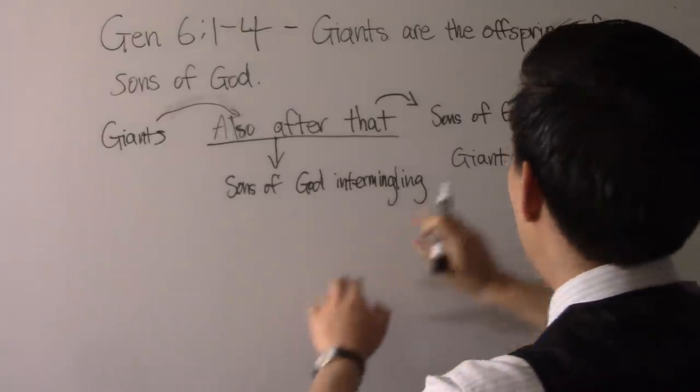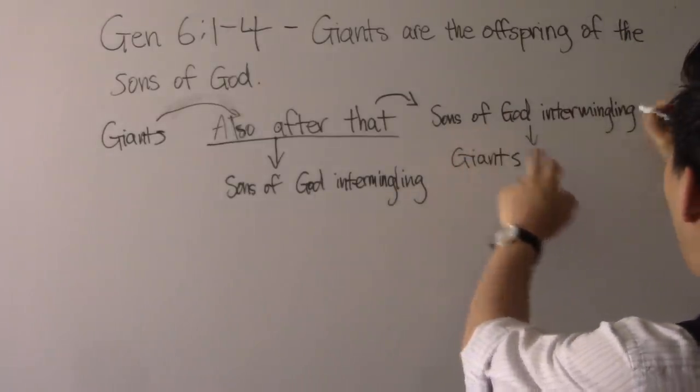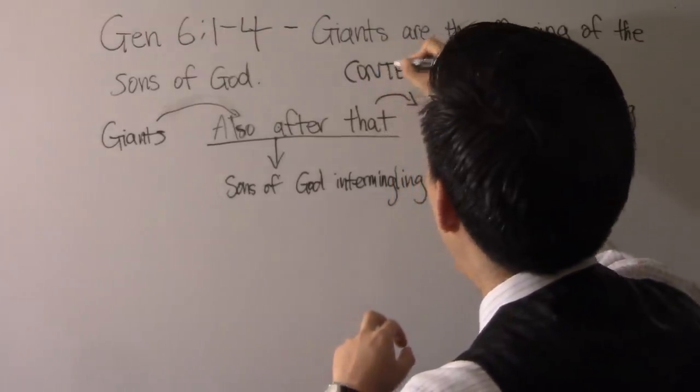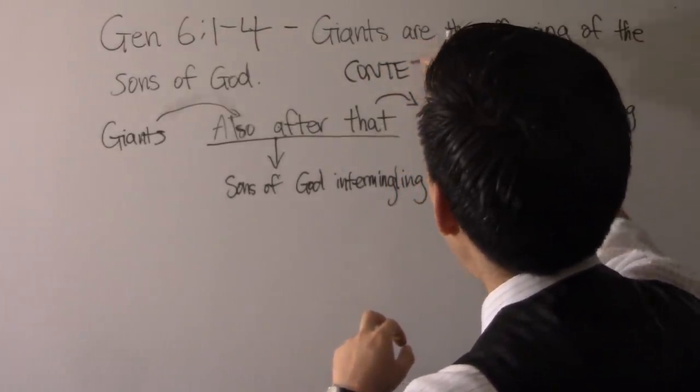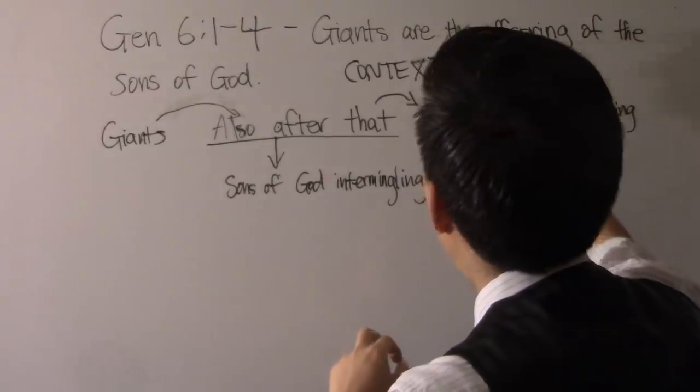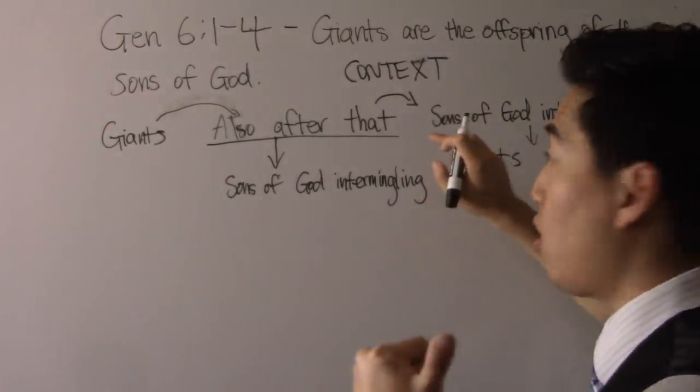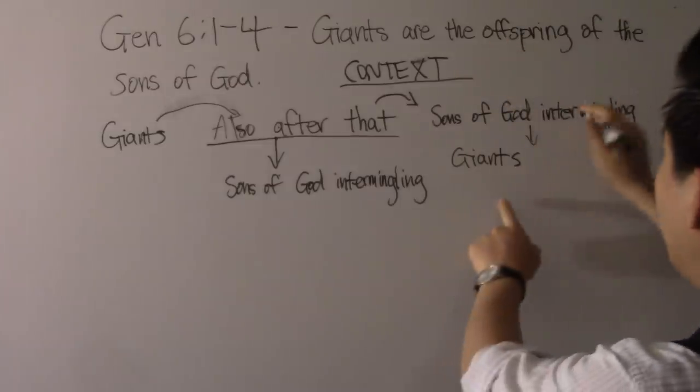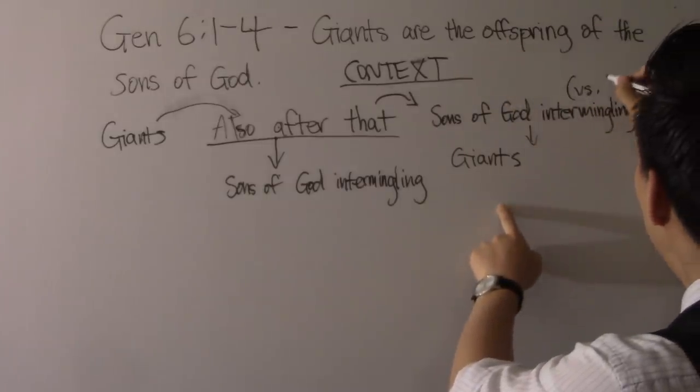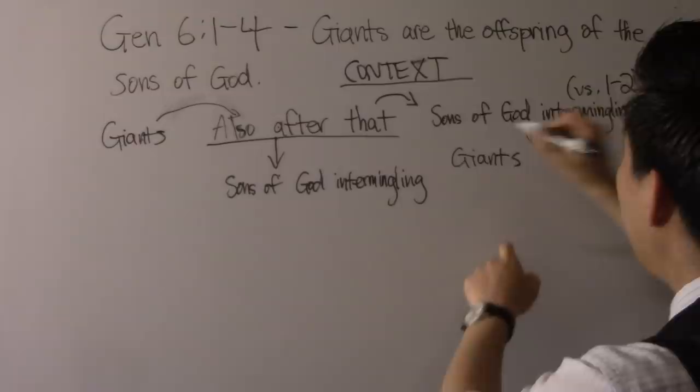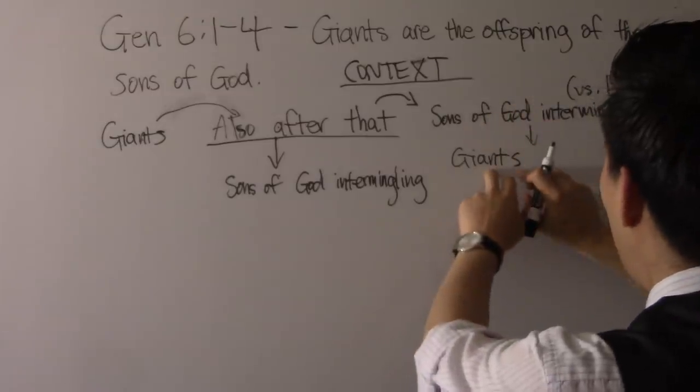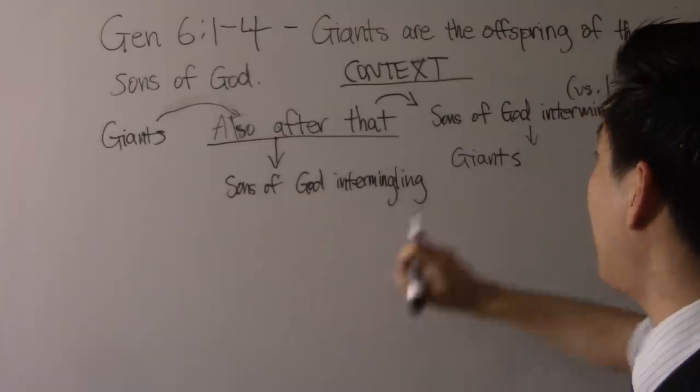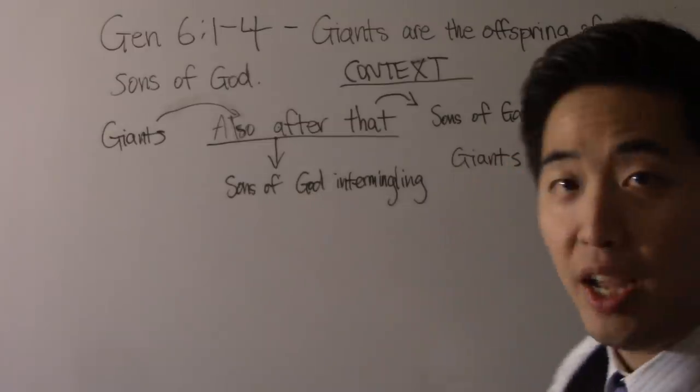So there's your answer right there. Context proved it. This is supported by context. Not just every single part of verse 4, which we did in our last video, but even context proved it. Context proved that verse 1 through 2, sons of God intermingling, and because of that, in those days, the giants came up. It's not giants first, it's sons of God intermingling, then the giants.